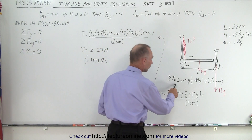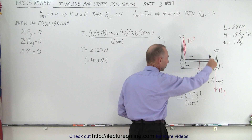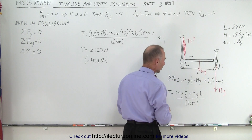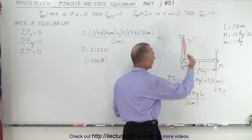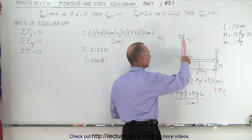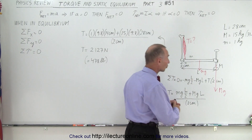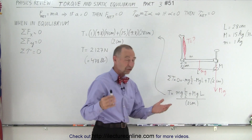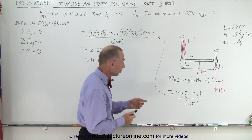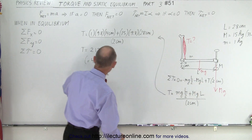Again, the sum of all the torques must add up to zero. Notice we have two negative torques caused by the weight that you're holding and the weight of the arm, and one positive torque which pulls the arm upward — that is the tension in the bicep. We're trying to find the tension in the bicep.